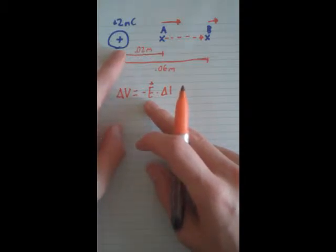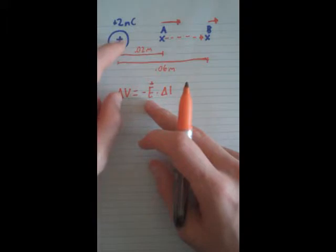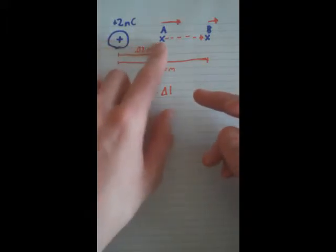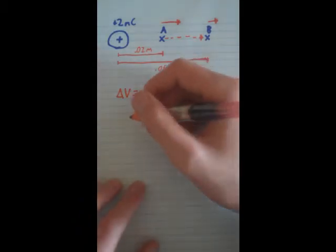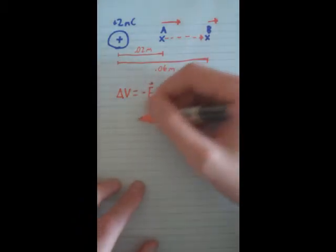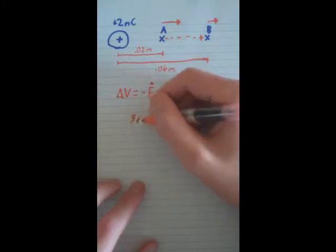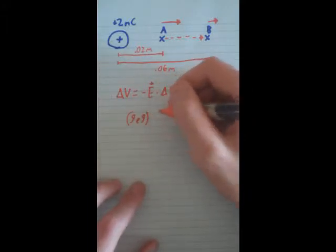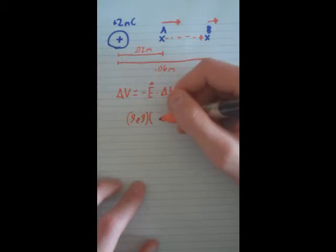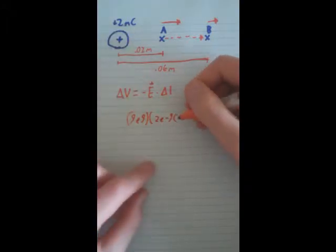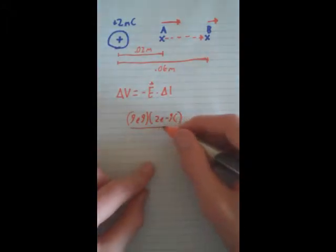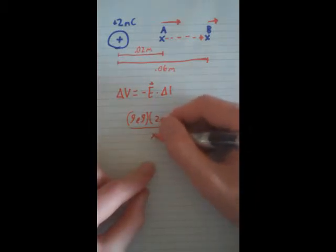and since it's basically a point charge with regards to these, we can just write E down as the point charge equation. So, we'll write it as 9E9, so that's the constant for it, times 2E to the negative 9th coulombs, because we had to convert nanocoulombs to coulombs. And all of that is over our x squared, which is changing.